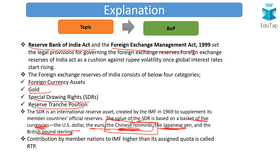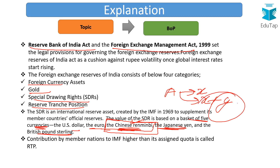Regarding RTP: in the IMF, each member is assigned a quota. Suppose a country A is assigned a quota of X by the IMF, but country A actually contributes X plus Y. The difference — X plus Y minus X, which equals Y — is known as the RTP, and it is counted in the domestic foreign exchange of that country.